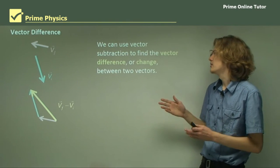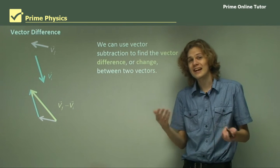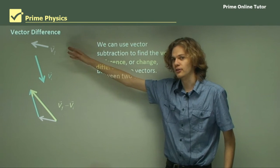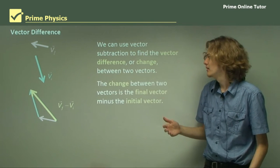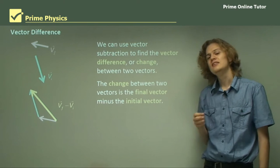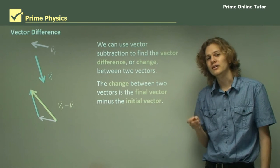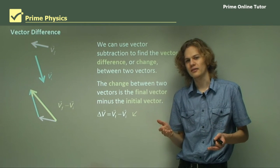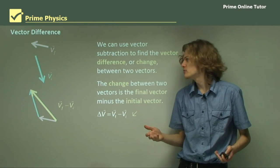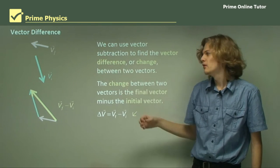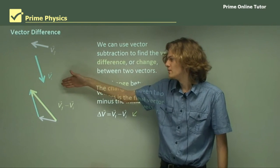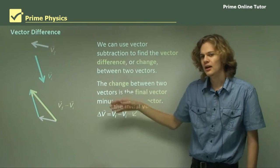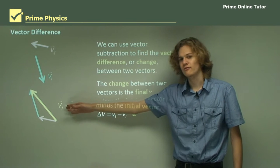We can use vector subtraction to find the vector difference — or the change — between two vectors. If we have an initial vector and a final vector, the change between two vectors is the final vector minus the initial vector. This gives us the change in the vector, the thing that's changed the motion. The blue vector has its direction reversed and then added to the final vector, giving us the vector change: VF minus VI.